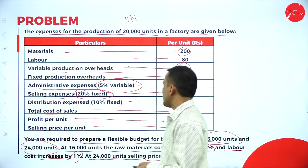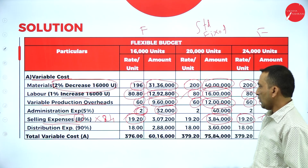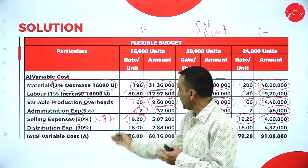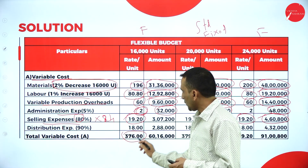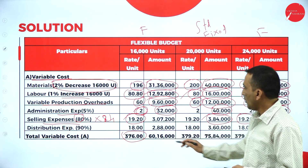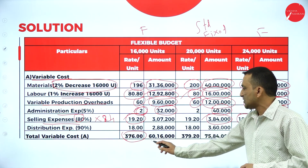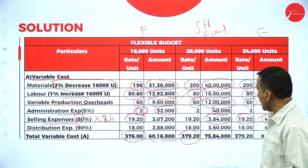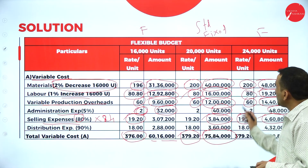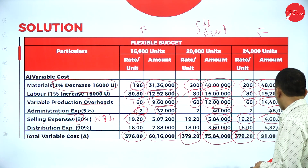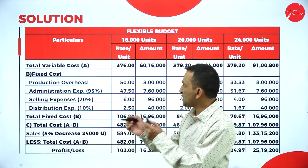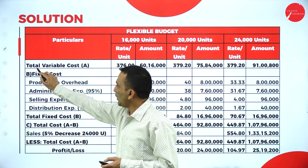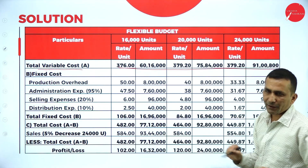The total cost of sales is 464, so we now take the total of all variable items. Once we calculate all the variable items, we sum them up to get the total variable cost: at 16,000 units the rate is 376 and the amount is 60 lakhs; at 20,000 units the total variable cost rate is 379.20 and value is 75,84,000; at 24,000 units the rate is also 379.20 and the amount is 91 lakhs 800.